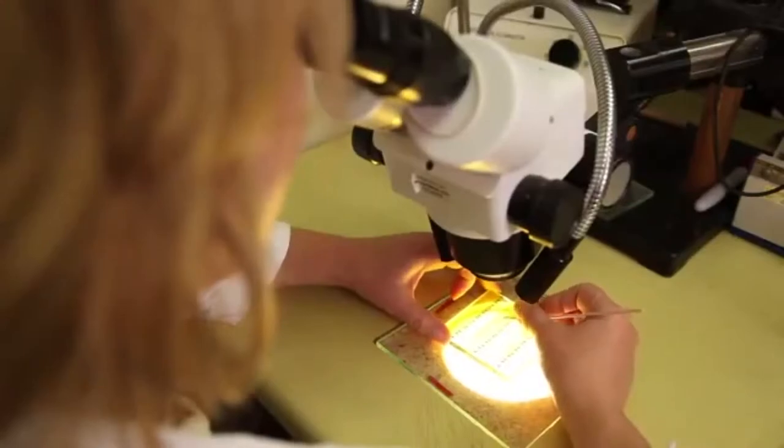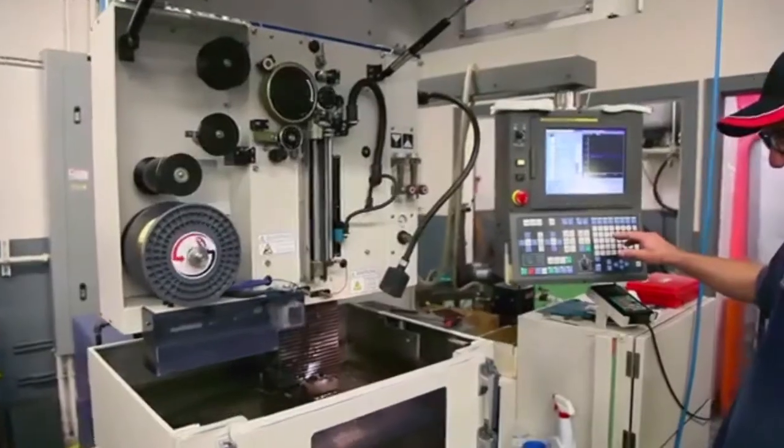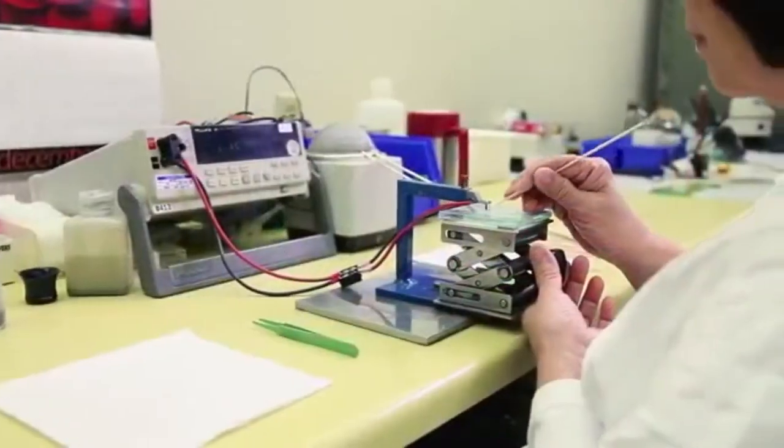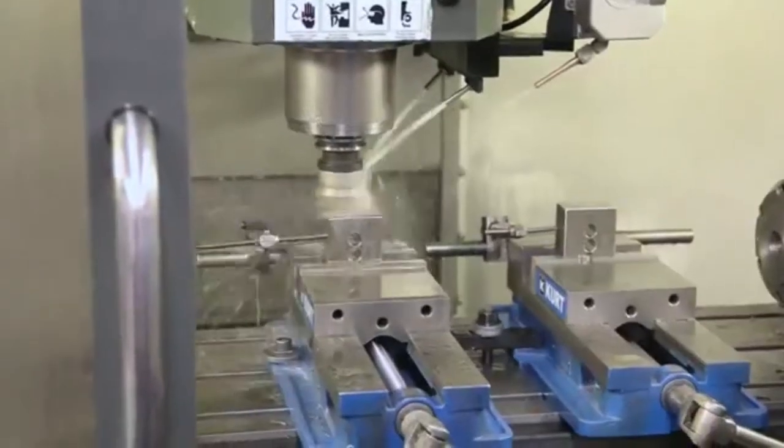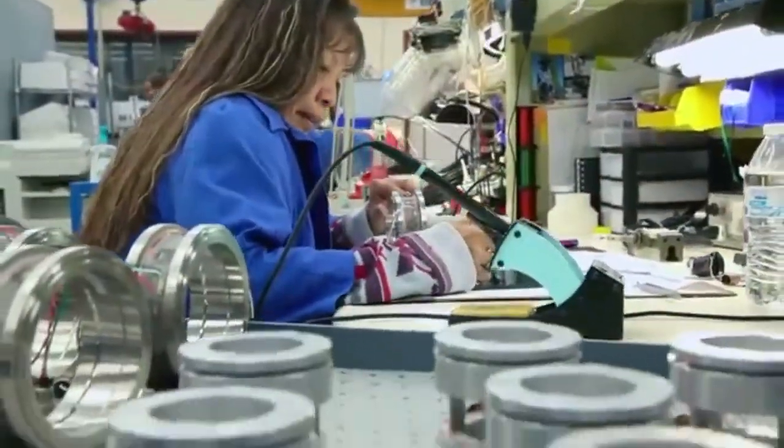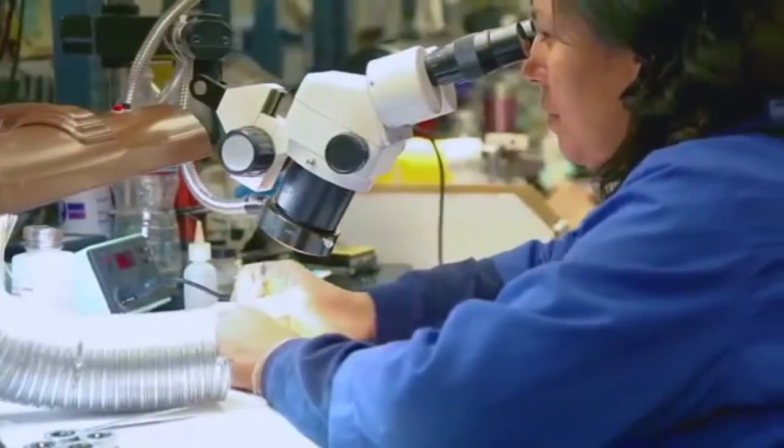Our load cells are constructed with strain gauges manufactured in-house from a unique proprietary alloy. Strain gauges are the engine of a high performance load cell, and our process gives us strict control, allowing us to perfectly match them to each load cell transducer, providing inherent temperature compensation, significantly greater fatigue life, higher output, and overall exceptional performance.